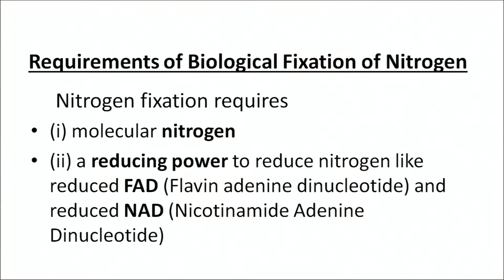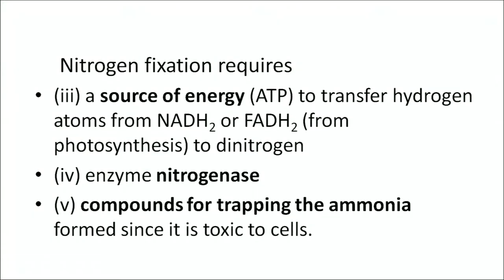Angiosperms also have an association with Brazilian grass, corn, and Azospirillum. Coming to the requirements of biological nitrogen fixation: this process requires first and foremost molecular nitrogen; second, a reducing power to reduce nitrogen such as reduced FAD (flavin adenine dinucleotide) and reduced NAD (nicotinamide adenine dinucleotide); and third, a source of energy which is chiefly ATP. This energy is needed to transfer hydrogen atoms from NADH₂ or FADH₂ to the dinitrogen molecule.